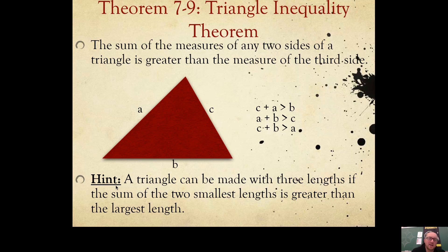Here's a different way of saying it. It's a little bit simpler. A triangle can be made with three lengths if the sum of the two smallest lengths is greater than the largest length.